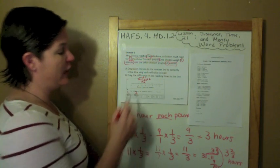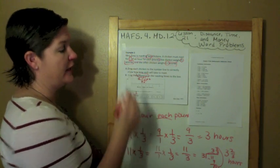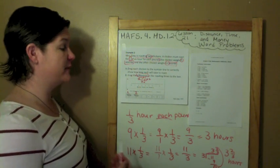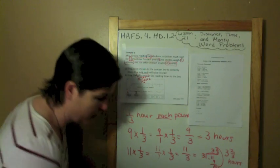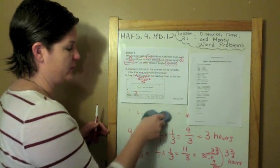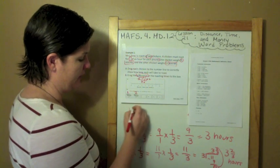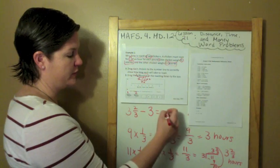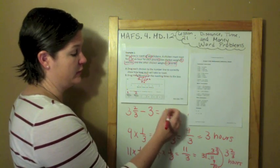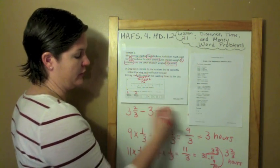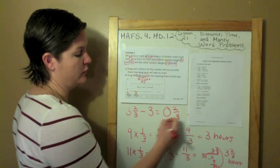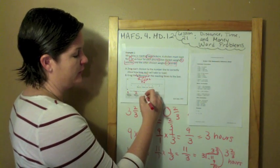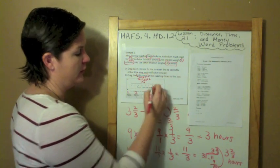Part B says drag the difference in the roasting times into the box. So I'm subtracting because it says find the difference. I'd be subtracting three and two thirds minus three. Subtract the whole numbers, that'd be zero. And then two thirds minus no fraction over here would be zero and two thirds, which we don't write as zero and two thirds. We just write it as plain old two thirds.